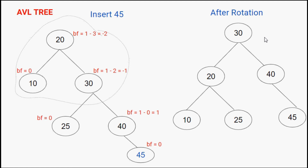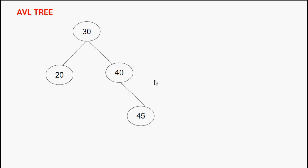Now let's look at an example where we delete a node from an AVL tree. Starting with a new AVL tree: nodes 20 and 45 are leaf nodes with balance factor 0. Node 40 has balance factor 0 minus 1 equals minus 1. Node 30 has balance factor 1 minus 2 equals minus 1. This confirms it is a valid AVL tree. Let's delete node 20.